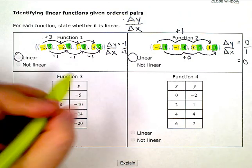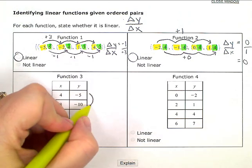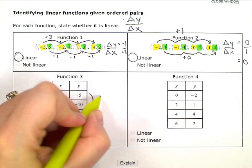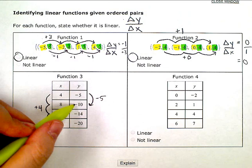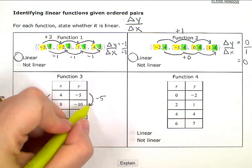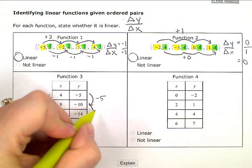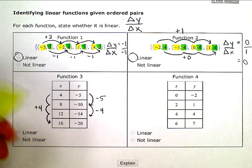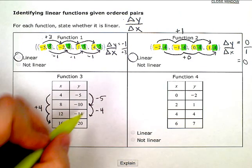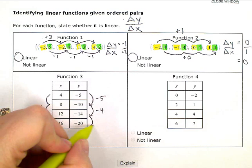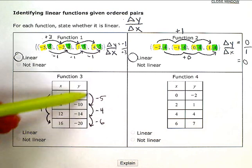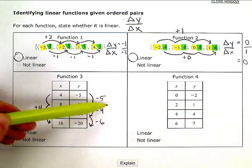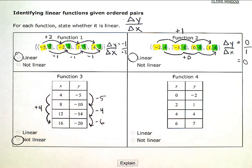So negative 5 to negative 10, that is a difference of 5, going down 5 or negative 5. Then from negative 10 to negative 14, this is not consistent. It changed. That time we only went down 4. And from 14 to 20, we're going down 6. So while this one is consistent, this one does not have a constant pattern of change. So this one is not linear.